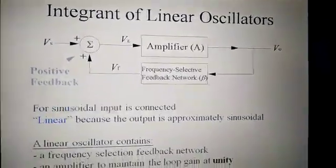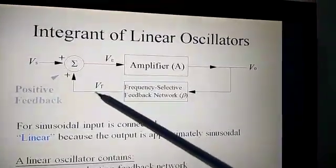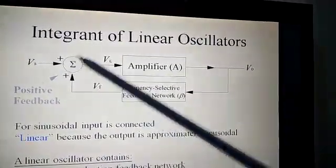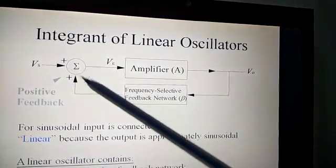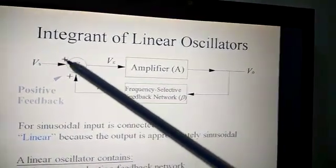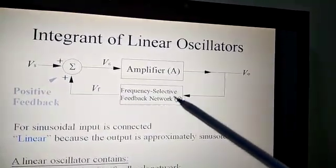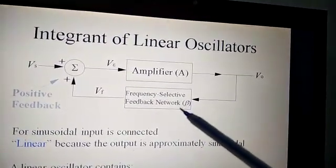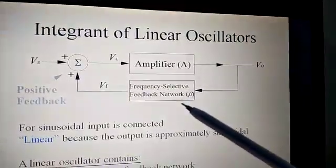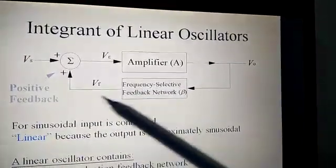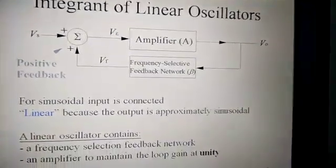As you already know, the structure of the feedback amplifier uses negative feedback. In an oscillator, the same type of structure is there but with positive feedback. The input and the feedback are both positive, so there is no phase difference between them — this is called positive feedback. The amplifier has open loop gain A, and there is a frequency selective circuit, the feedback network, with feedback factor beta. The feedback voltage is the signal to the amplifier.